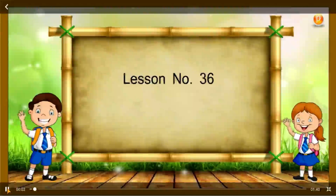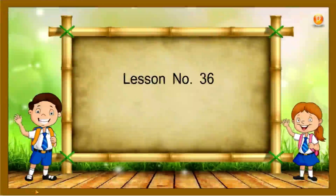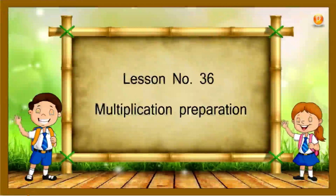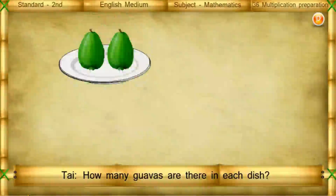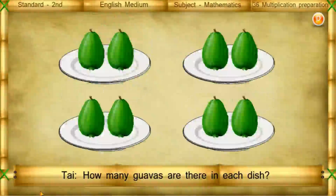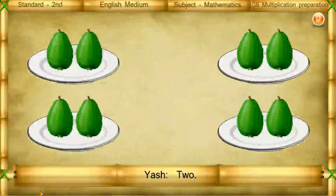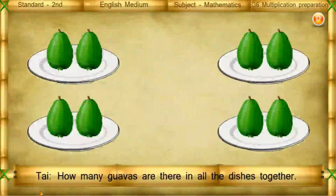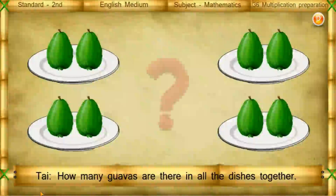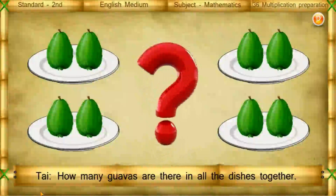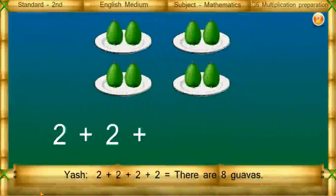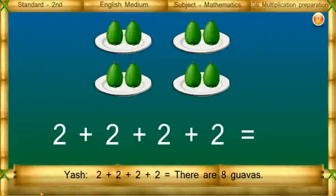Lesson number 36. Multiplication Preparation. How many kawas are there in each dish? Yes, 2. How many kawas are there in all the dishes together? Yes, 2 plus 2 plus 2 plus 2 equals 8. There are 8 kawas.